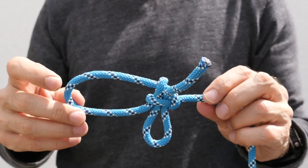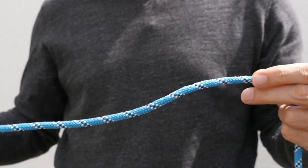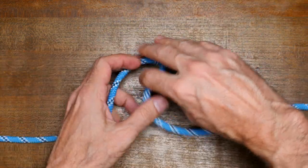One difference between the bowline and the kalmyk is that the kalmyk is tied with a slip, so it's easy to untie with a simple pull on the tail end.